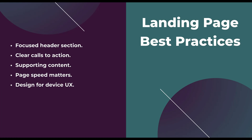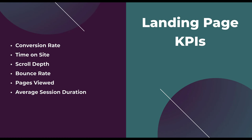The second-to-last best practice is to track your KPIs. Know upfront what metrics you're trying to improve and make sure you have the platform or software in place to track them. Key KPIs for landing pages include: conversion rate, time on site, scroll depth, bounce rate, pages viewed per session, and average session duration. Individually, each gives you an indicator of how people are engaging with your page; together, they give a pretty good picture of whether users are having a good experience. Most of these are available for free in Google Analytics.